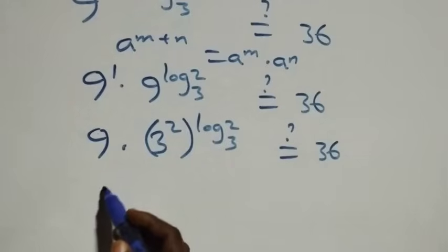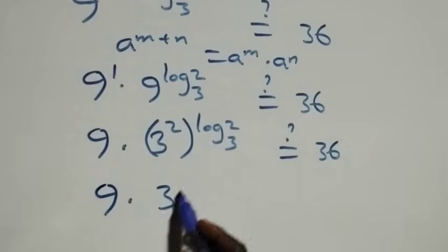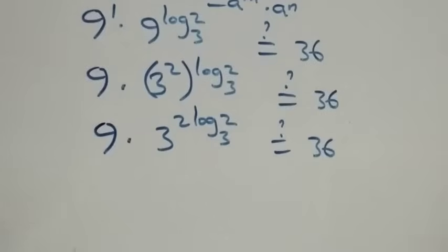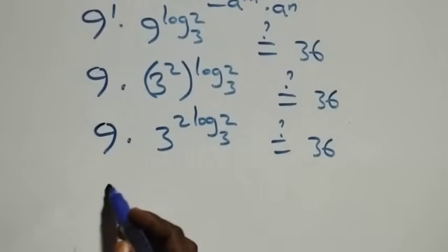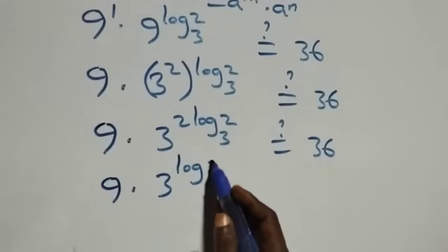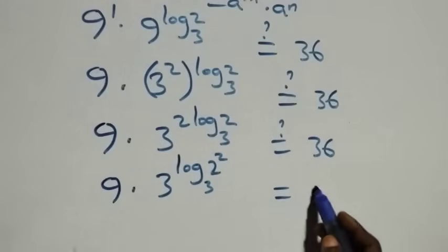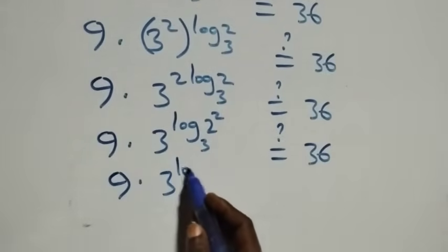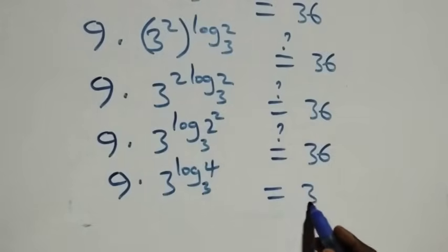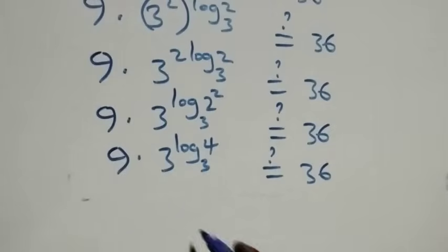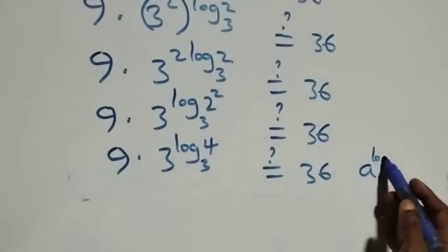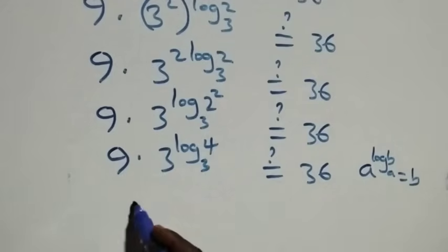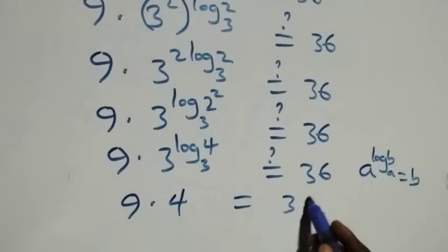The power multiplies, giving 9 times 3 raised to power 2 log₃2, which equals 36. We can bring the 2 back up using the power rule to get 9 times 3 raised to power log₃(2 squared), that is log₃4, which equals 36. Applying the law of logarithms — a raised to power log base a of b equals b — we get 3 raised to power log₃4 equals 4. So we have 9 times 4, and we ask whether this equals 36. Indeed, 9 times 4 equals 36, which equals 36.